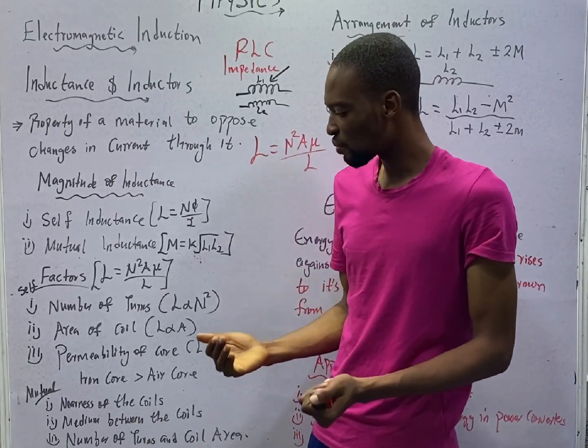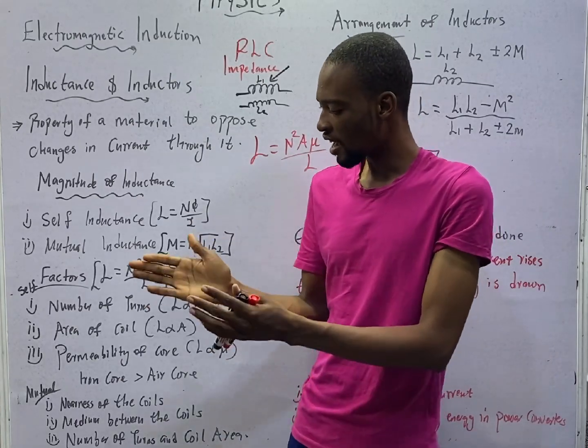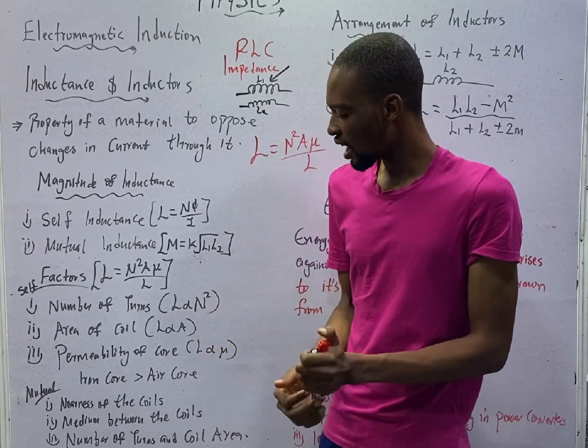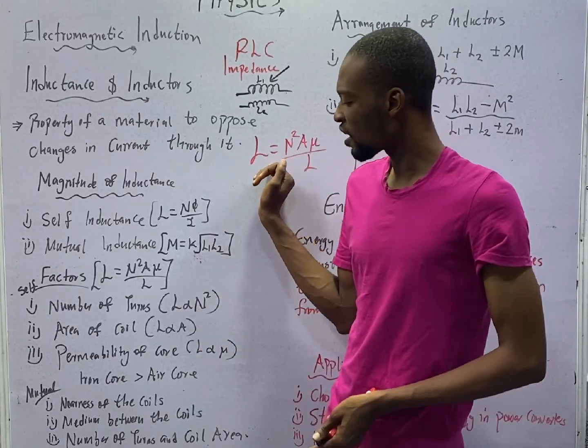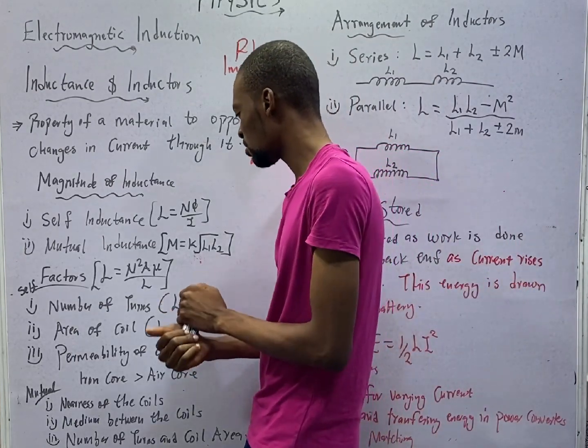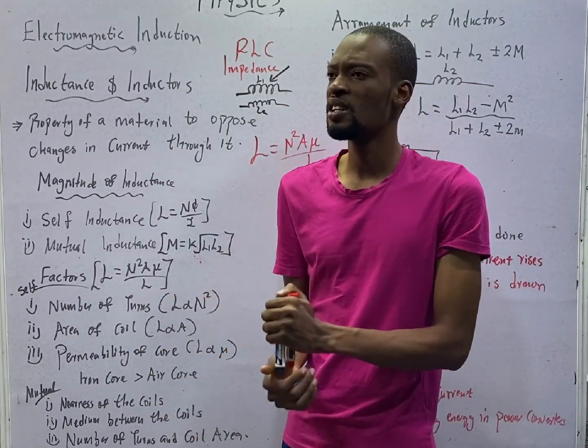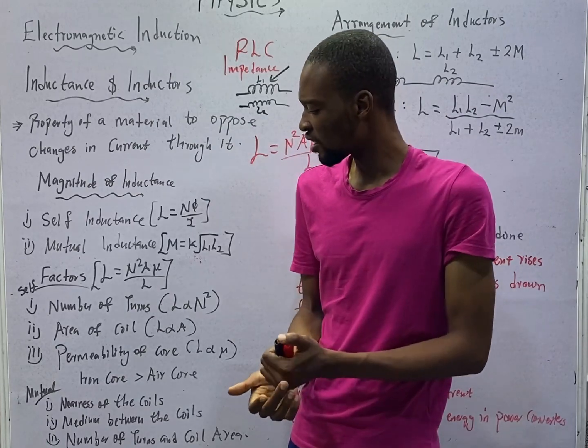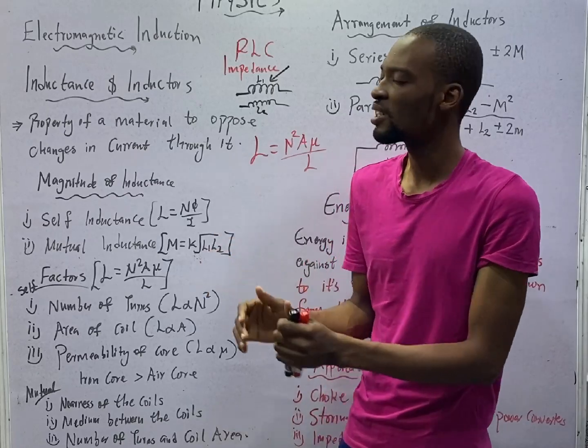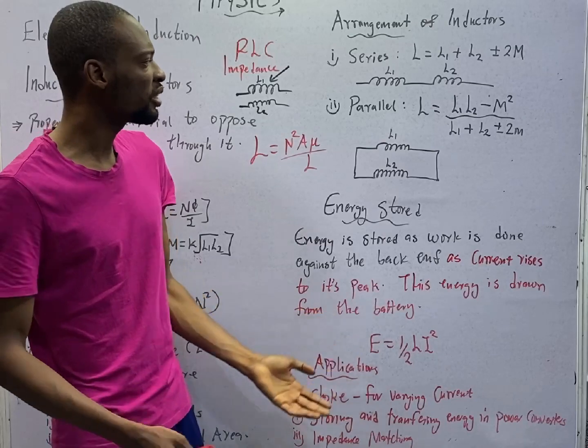Now, medium between the coil affects mutual inductance. Are you separating them by air, iron, or something else? So, what medium is between the two coils? And finally, number of turns also affects mutual inductance. And area affects mutual inductance. Let's say, the factors affecting self-inductance, they can also affect mutual inductance. But in addition, nearness of the coils and the medium between the two coils add to mutual inductance.